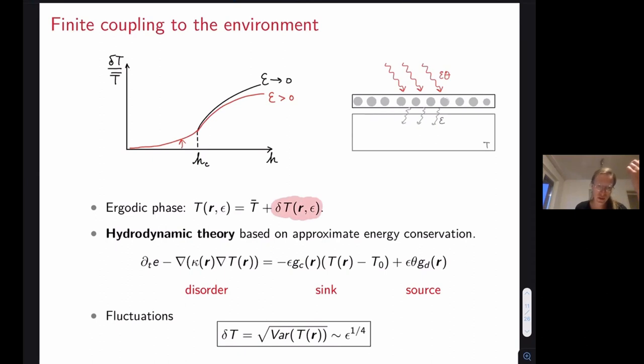We expect that now this phase transition will be smoothened into a crossover. So also already on the ergodic side we will have some variations in local temperatures. The kind of minimal description of what should happen is that we simply consider a hydrodynamic equation, basically look at the continuity equation for energy which is now supplemented with a source and a sink term for this coupling that represents the weak coupling to the drive and to the bath.